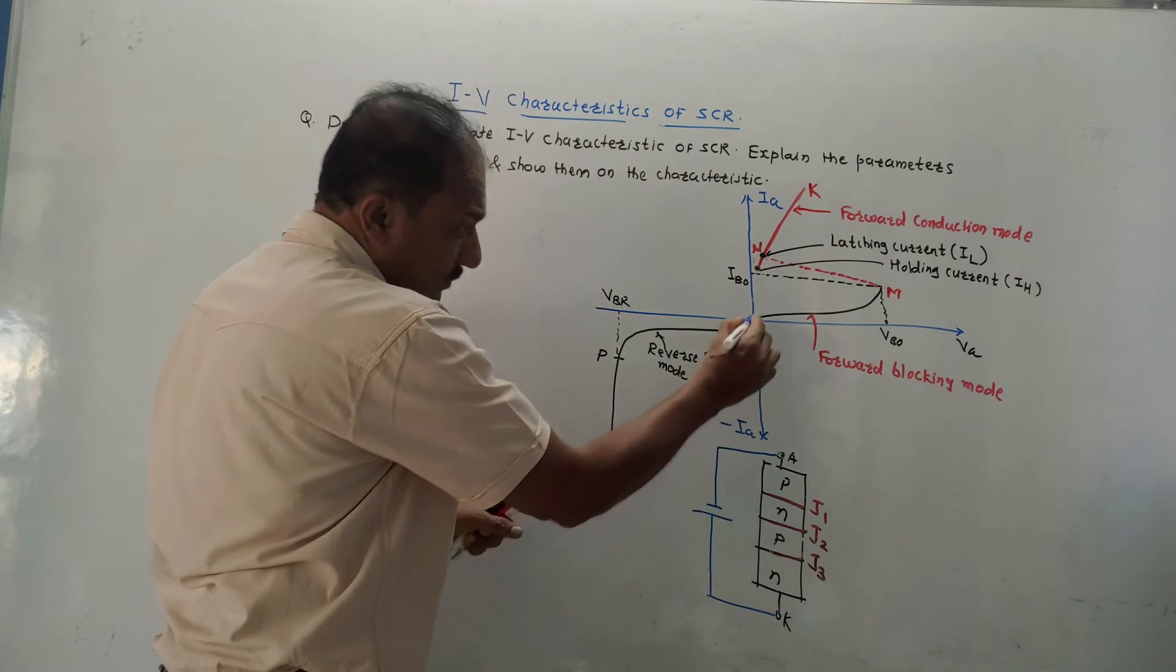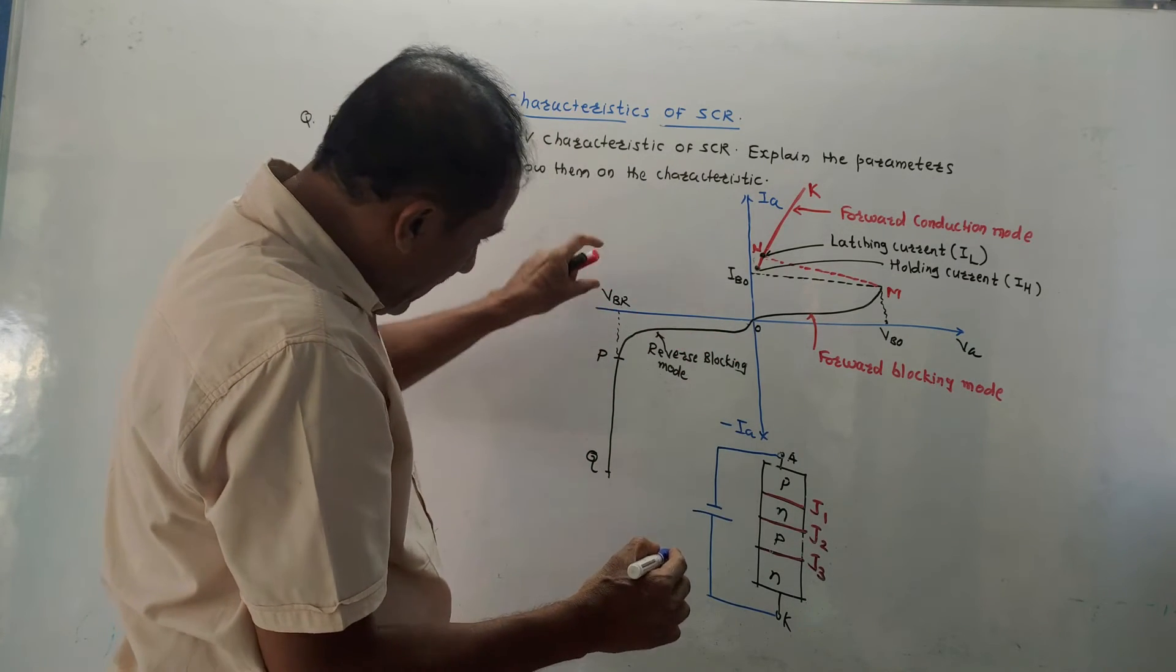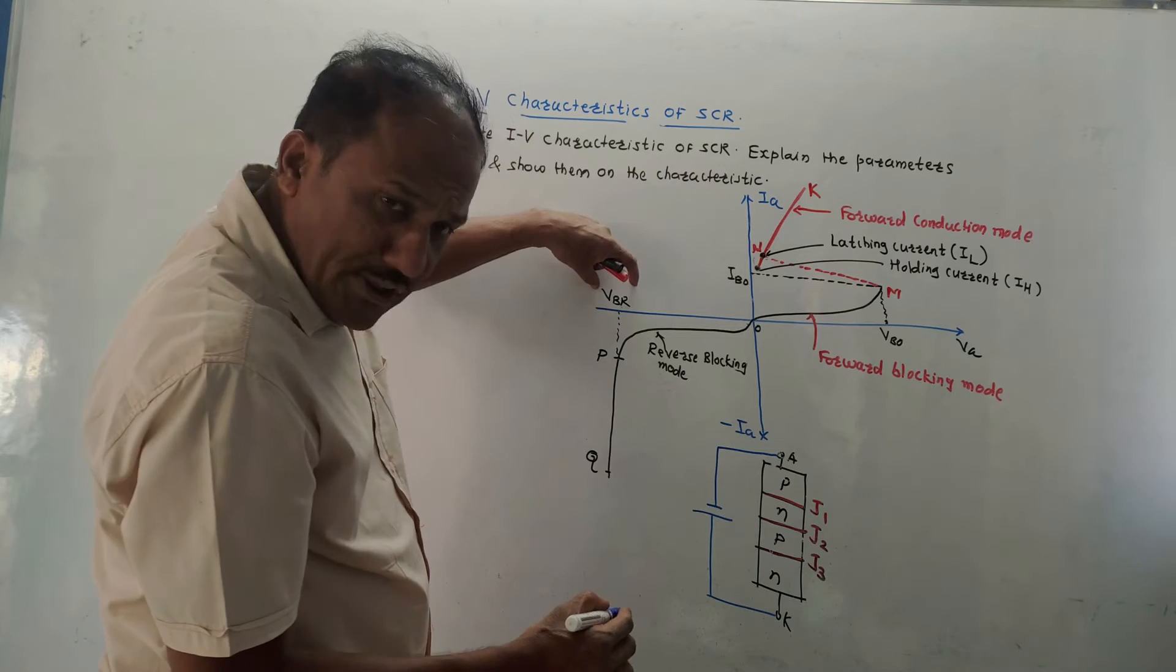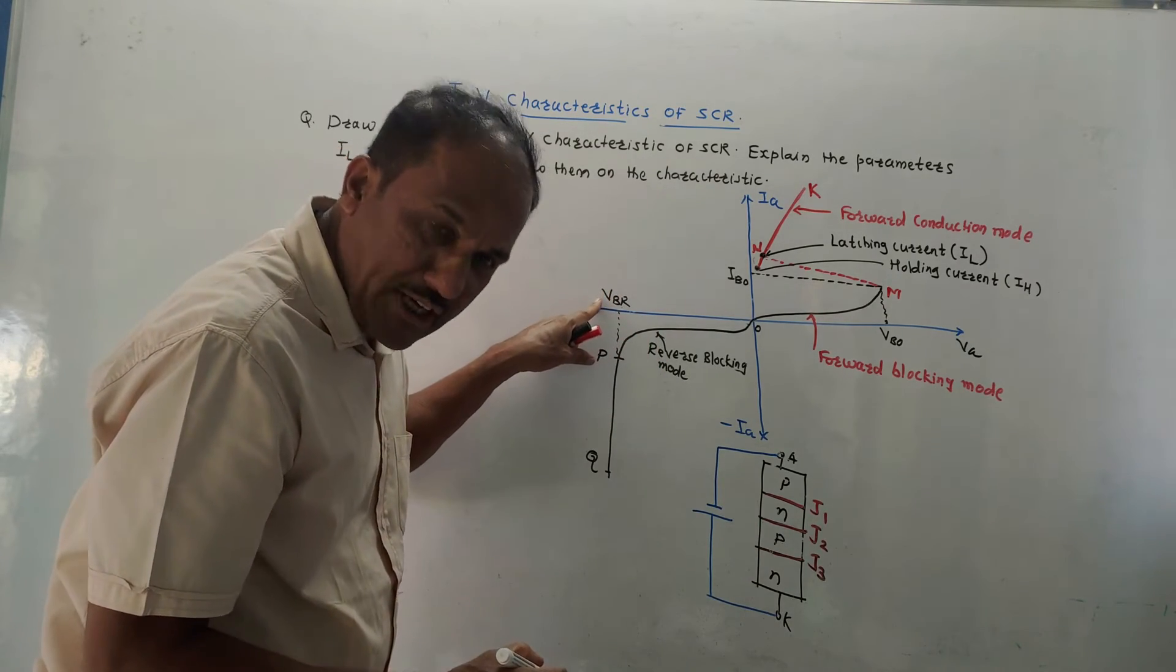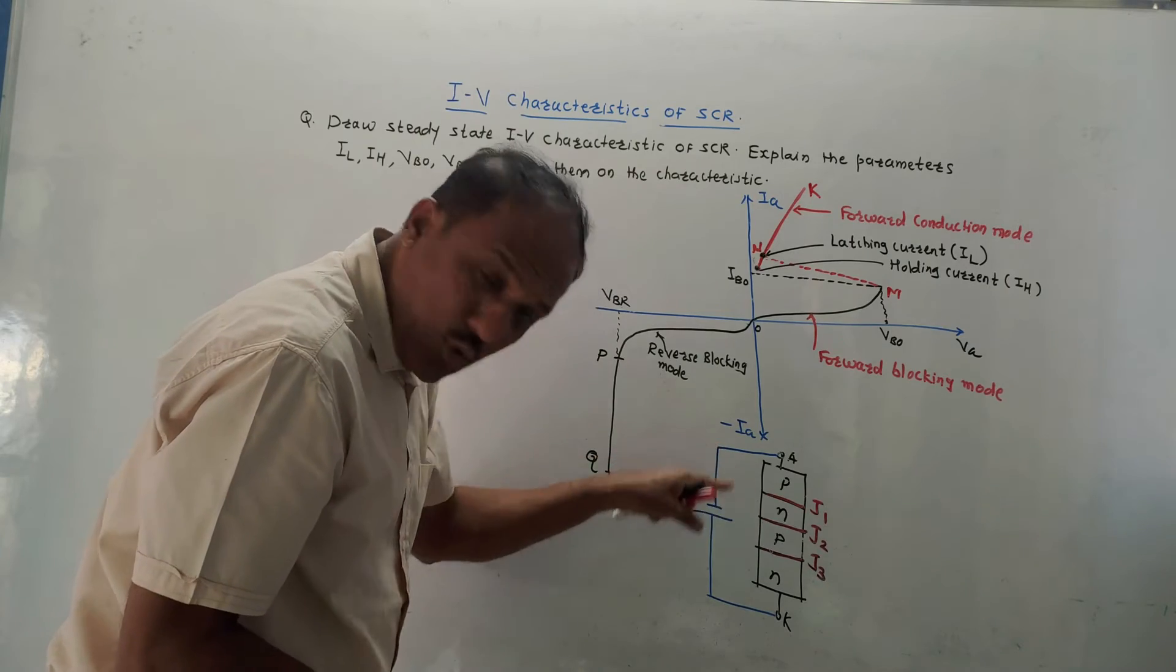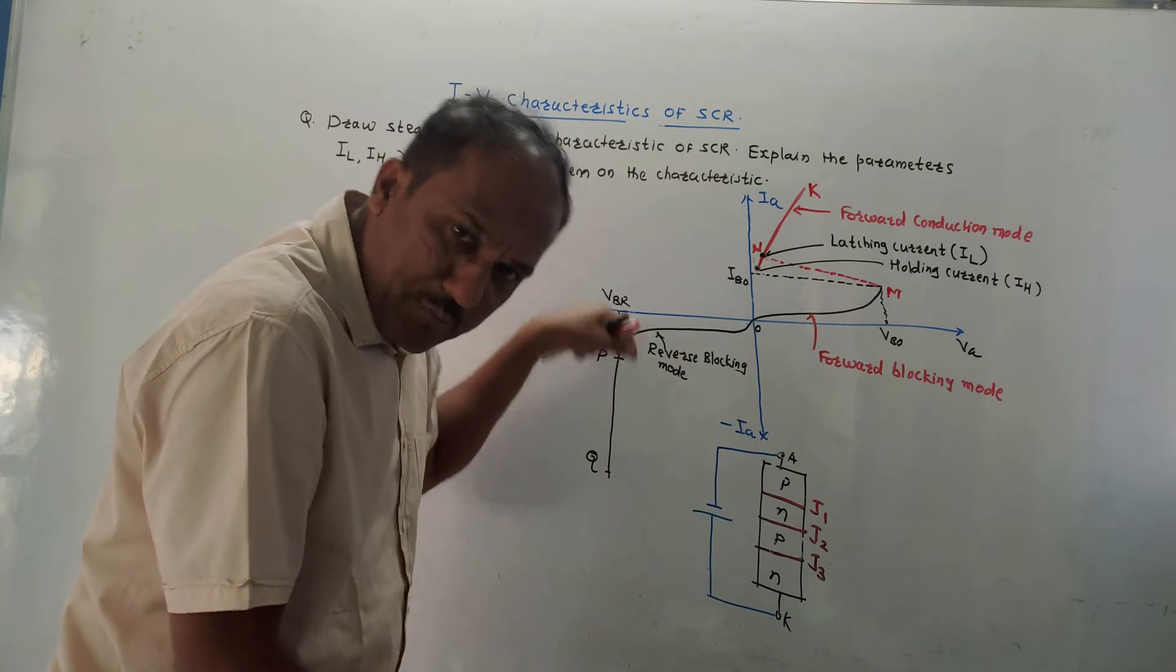In such cases, very small amount of leakage current flows. It is very small, but there is one particular voltage, that is known as VBR, reverse breakdown voltage. If you increase this voltage beyond a certain limit, then breakdown, avalanche breakdown takes place.